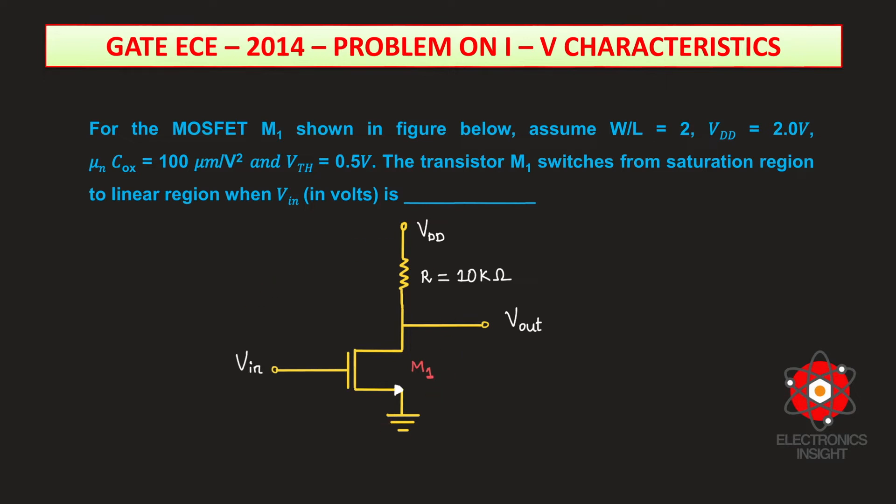In this case, initially the M1 transistor will be in saturation region. The working principle of NMOS transistor or an inverter with resistive load is clearly given with the LTspice simulation in a separate video. The video link is shared in the description box below and also on the i button.